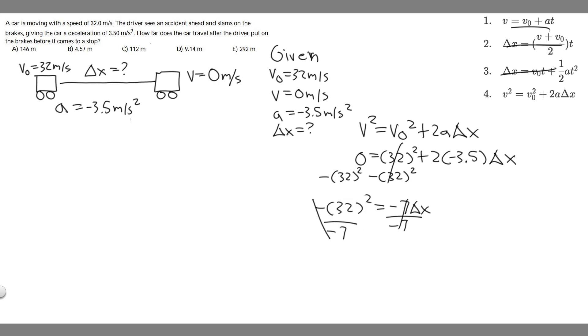But if you go ahead and do this, 32 squared, and then divide by 7, you're going to get delta x equals 146.2857, and so on. You can just round to 146. So 146 meters, that's going to be basically how far it travels before it's able to stop. If we look at our answers, A is 146 meters. So your answer to the problem is A, and hopefully you found this useful.